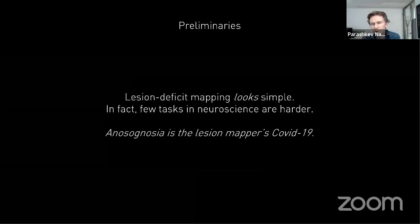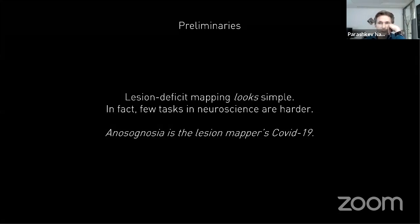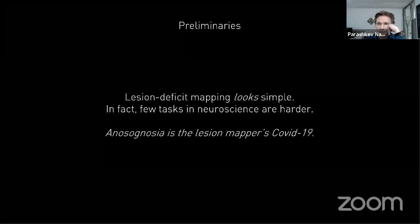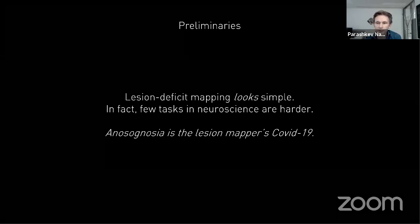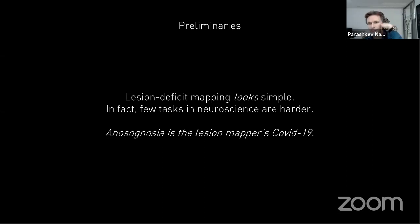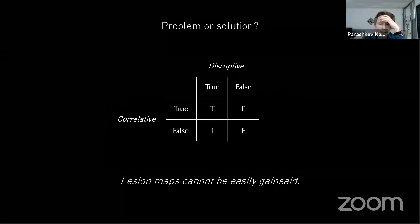There is something very disturbing about the task of lesion deficit mapping: on the surface it looks very simple, as if we could simply borrow technology developed for other brain mapping purposes such as functional imaging and apply it to building lesion deficit maps. In reality, there are few tasks in neuroscience that are harder than lesion deficit mapping. The fact that it merely appears simple is a major handicap — it means we suffer what neurologists call nosognosia: we're not aware that what we're doing is wrong.